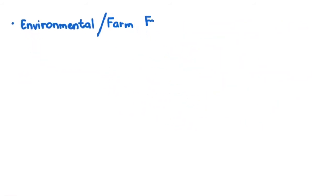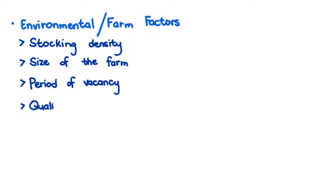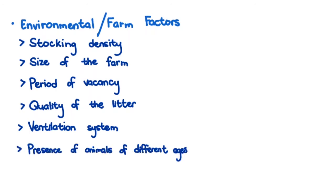Environmental or farm factors include stocking density, size of the farm, period of vacancy, quality of the litter, ventilation system, presence of animals of different ages, and anticoccidials used, among others.